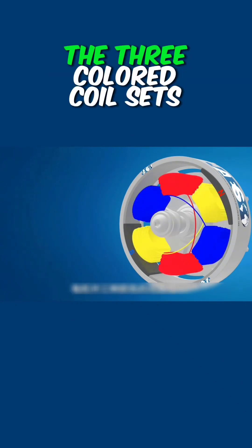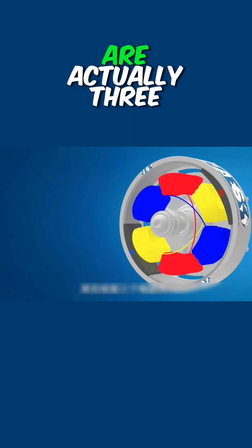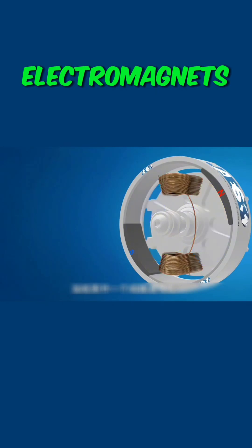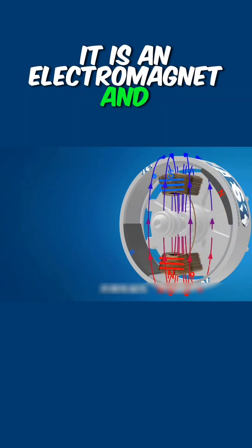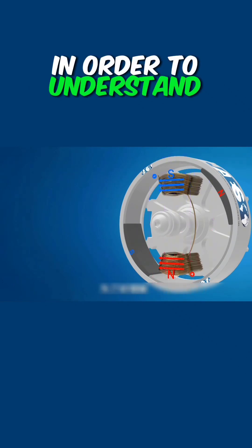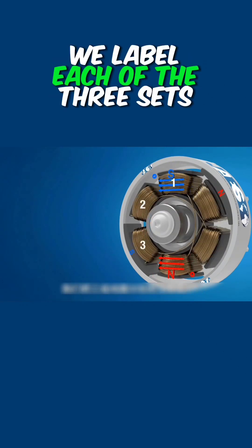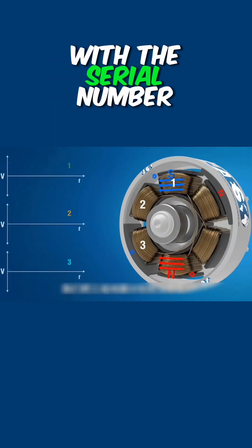As shown in the figure, the three colored coil sets in the motor are actually three electromagnets. When one of the coils is energized, it possesses magnetism. To understand better, we label each of the three sets of coils with a serial number.